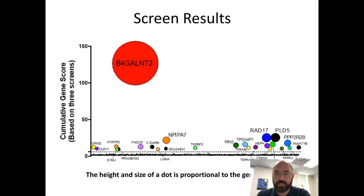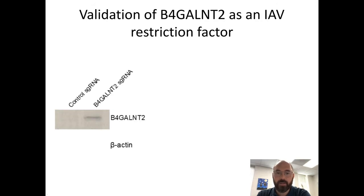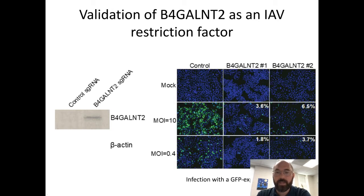The first step is to validate this prediction. We performed a Western blot and confirmed that when we introduce the guide RNA targeting B4GALNT2, we see upregulation of that gene. We then made two cell lines overexpressing B4GALNT2 compared to a control and infected them with a GFP-expressing virus as a direct measurement of infection. The control cells get infected while the B4GALNT2-overexpressing cells are able to prevent viral infection. It looks like a real restriction factor.